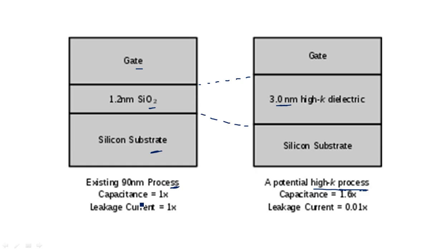If you look at the capacitance and leakage currents: if silicon dioxide has capacitance of one time and leakage current of one time, then comparing with the high-k process, the capacitance is increased by 1.6 times the conventional process, and the leakage current reduces to 0.01 times — meaning the leakage current is reduced by 100 times. This is the advantage of using high-k dielectric material.